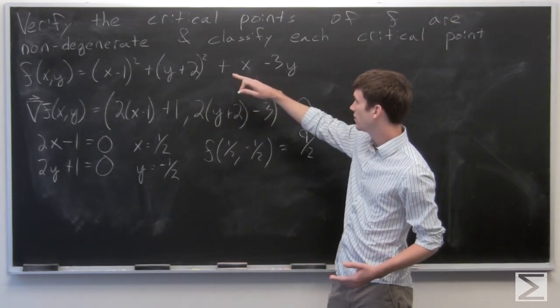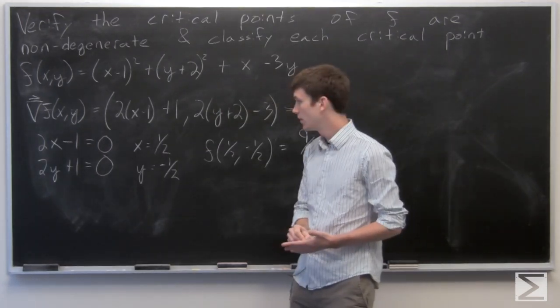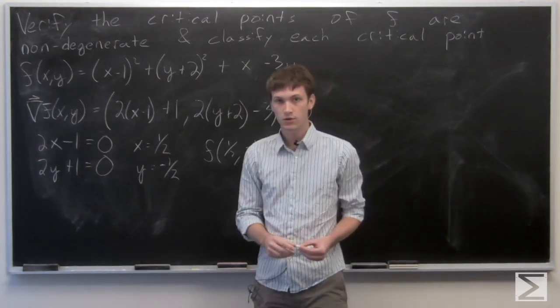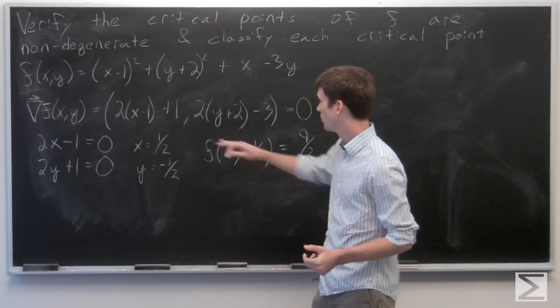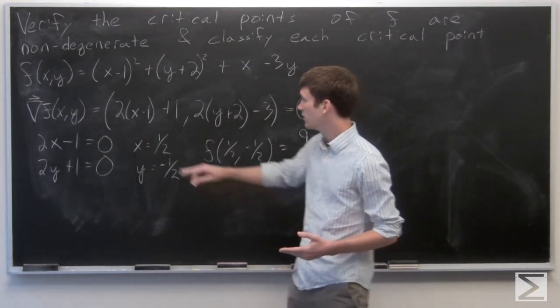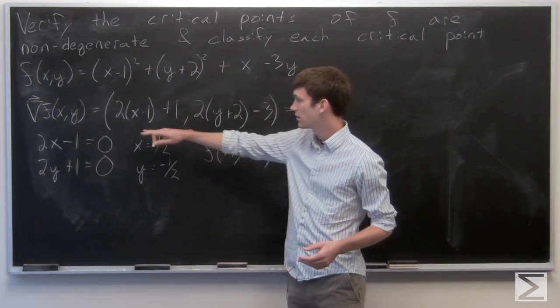So we want to calculate, or we want to make sure that our critical points are non-degenerate, which means that the determinant of the Hessian matrix is non-zero. So the Hessian matrix is defined as the second partial derivatives of f. So let's calculate the second partials.